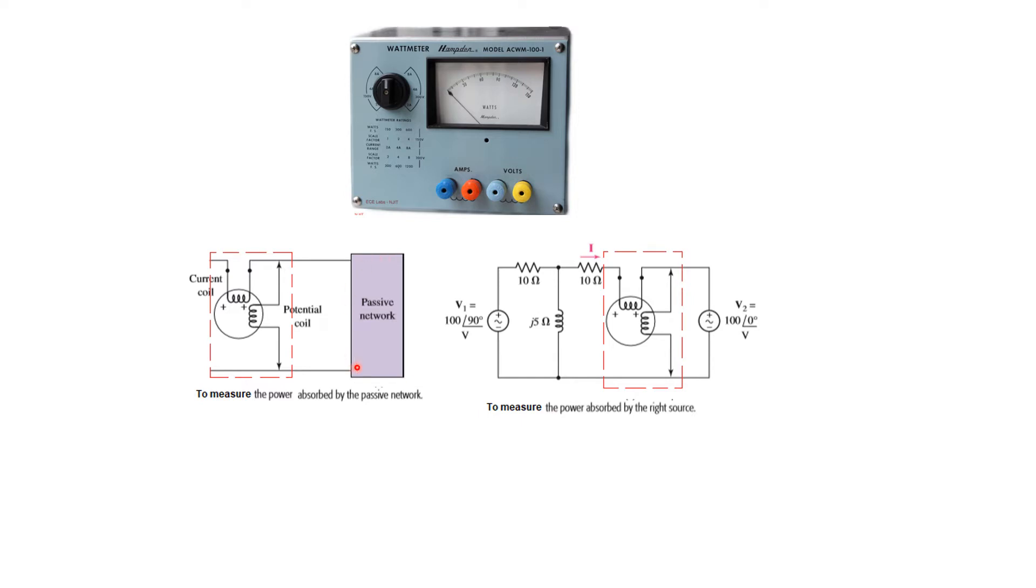The way it is connected: this is the circuit whose power we need to measure. Then we connect the current terminal in series with the circuit and the potential terminal or voltage terminal in parallel with the circuit.